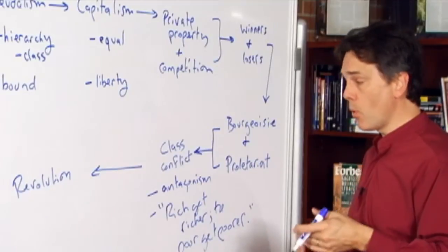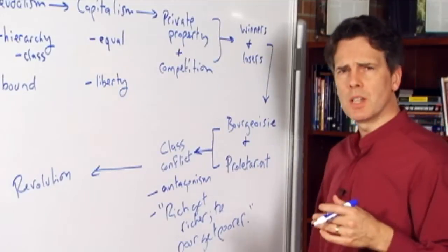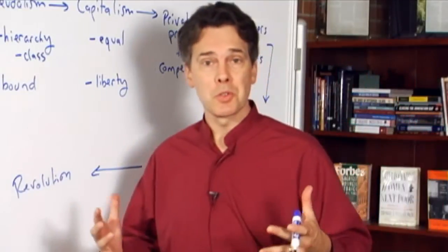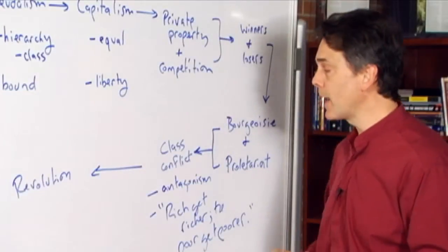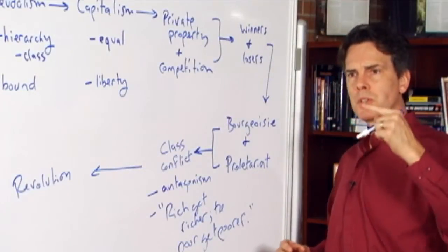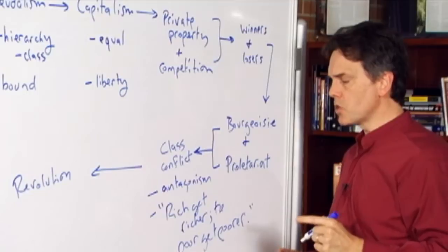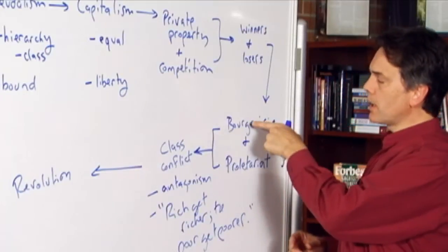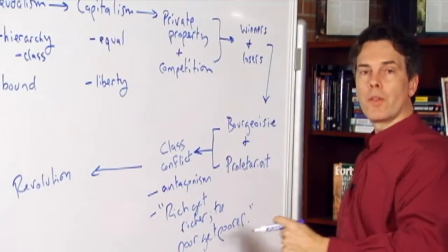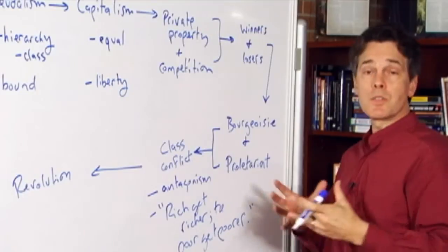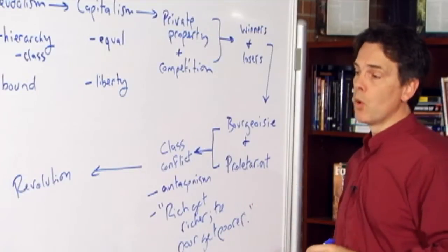At a certain point, the proletariat will realize that they vastly outnumber, that there's a great deal of strength in numbers. They will be able to conceptualize and realize explicitly that the rich are getting richer at the expense of the poor, that they're not getting ahead, and they will essentially decide that they're not going to take any more.